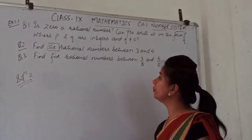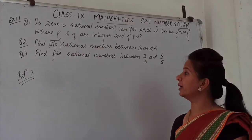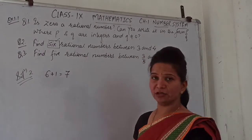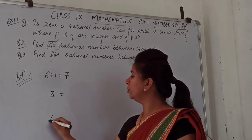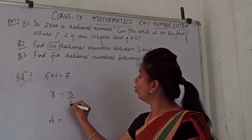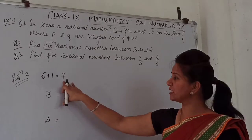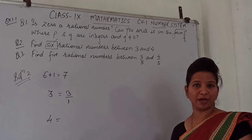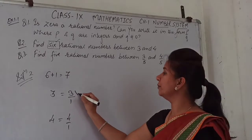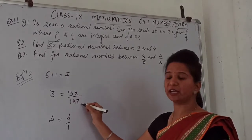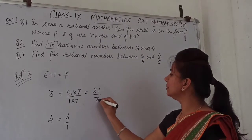For the solution to question number 2, we have to find 6 rational numbers between 3 and 4. Since we need 6, we take 6 plus 1 equals 7. We use 7 as the denominator. Multiplying 3 by 7 over 7, we get 21 upon 7. This is an equivalent fraction — 21 upon 7 equals 3.